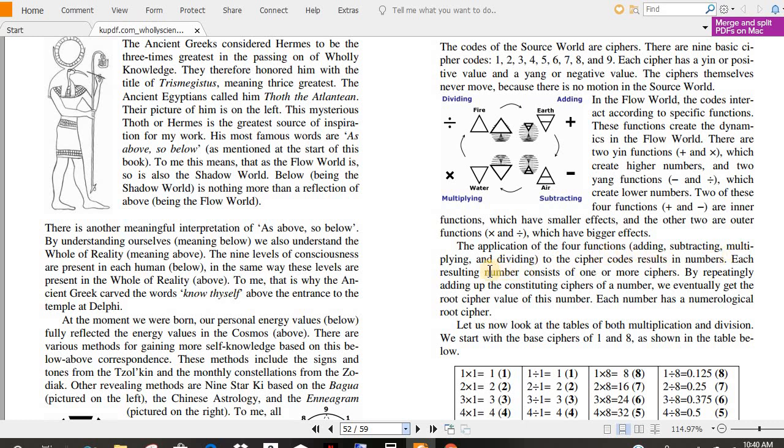The application of the four functions, adding, subtracting, multiplying, and dividing to the cipher codes results in numbers. Each resulting number consists of one or more ciphers. By repeatedly adding up the constituting ciphers of a number, we eventually get the root cipher value of this number. Each number has a numerological root cipher. Let us now look at the tables of both multiplication and division. We start with the base ciphers of one and eight as shown in the table below.